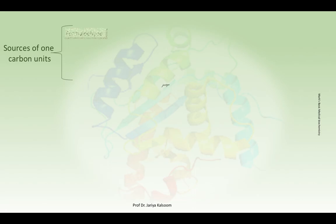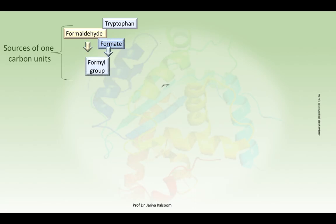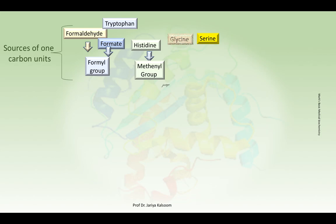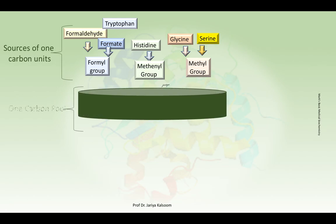The one-carbon fragments are derived from different sources. For example, formate is produced by oxidation of the amino acid tryptophan and it contributes the one-carbon fragment in the form of a formyl group. Further, the catabolism of histidine yields formiminoglutamate, which donates a one-carbon fragment to tetrahydrofolate in the form of a methenyl group.